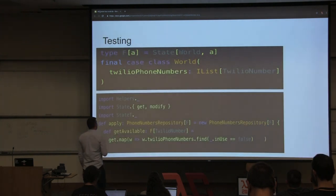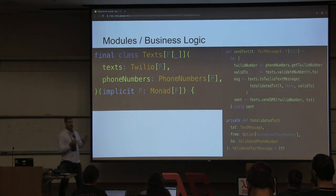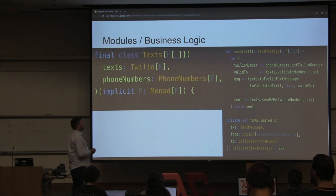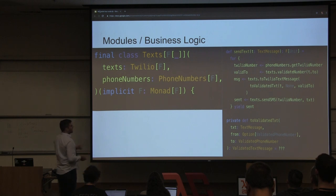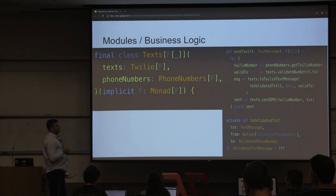So what do we have right now? We have quite an accurate idea of what our application actually needs to do. At this point we can forget about databases and forget about Twilio and just make sure our business logic does what we think it does. This is one of the advantages of abstracting over our effect like this — we can plug anything that has this shape into this hole, and this can really help us with our testing.